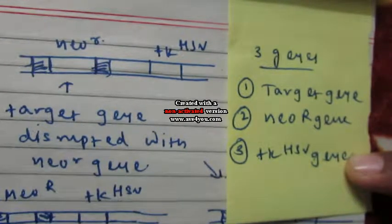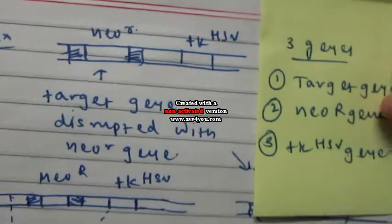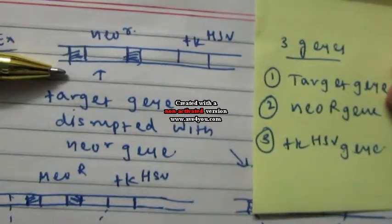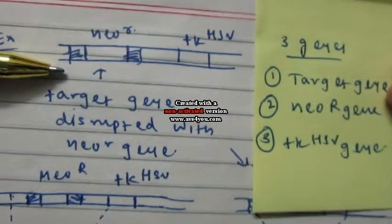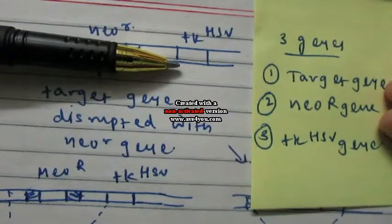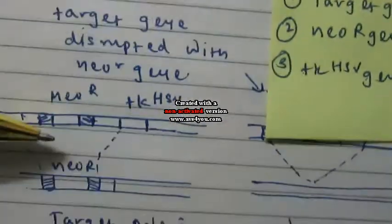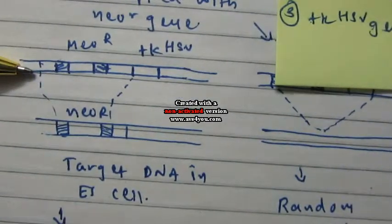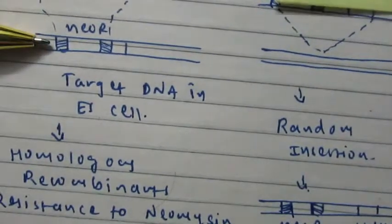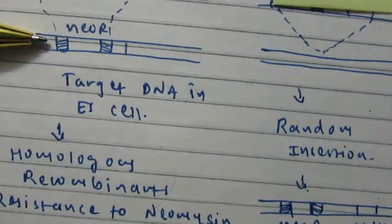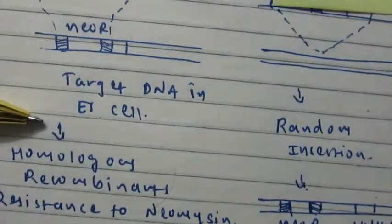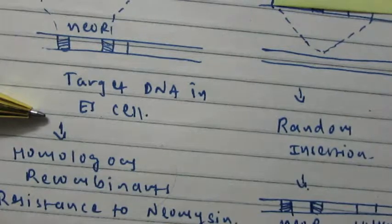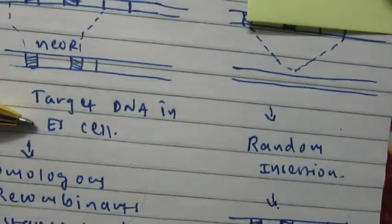In the first case, the target gene is disrupted with the neomycin antibiotic resistance gene, and the TK gene is located outside the target gene region. If there is homologous recombination between our target embryonic stem cell and this recombinant embryonic stem cell, all transformed cells may contain the target DNA with the neomycin resistance gene, so all transformed cells will grow and survive in the presence of neomycin.